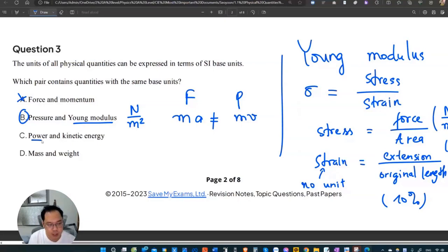Kinetic energy, of course, different from the power. They are different. So not C. Mass and weight, they are different. Mass is kilogram. Weight is Newton, which is the magnitude of the gravity.